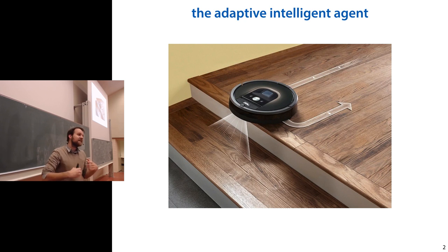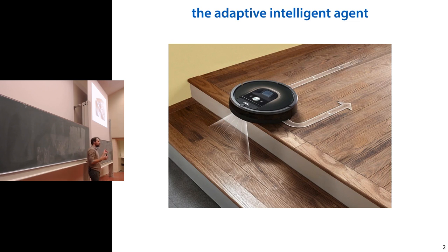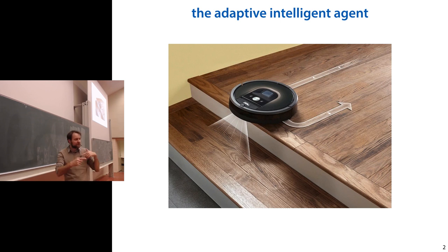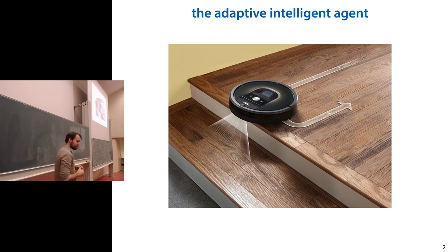Today we're going to not do that. Reinforcement learning is a setting wherein you actually model an agent inside a world, both interacting with that world — choosing what to do, getting feedback from the world, and learning about the world in real time.